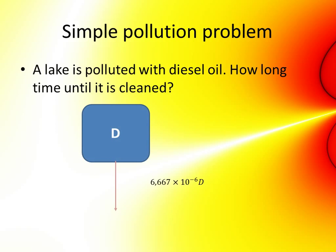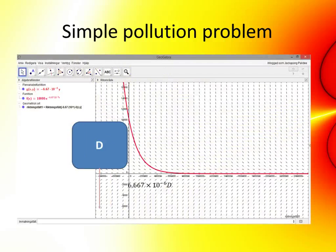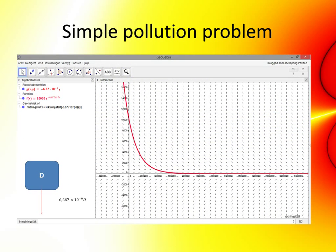Simple pollution problems. This is the very basic problem: you've got one container, one arrow. You've got pollution of diesel oil in a lake — it will, over time, go out of the lake. But how long will it take? This gives you an exponentially declining function, shown here with a slope field attached to it.